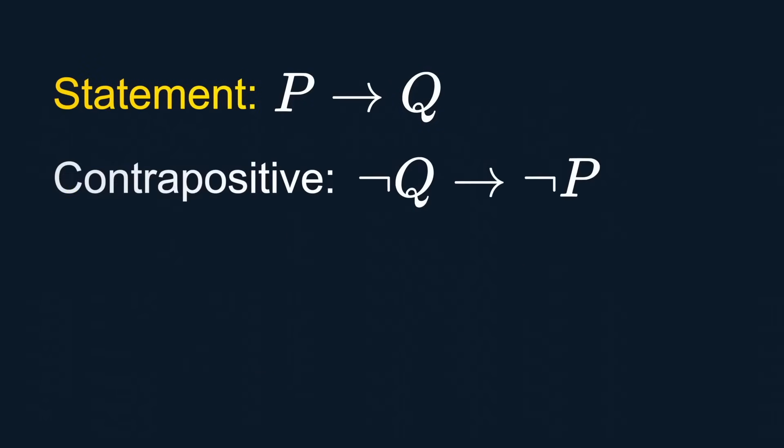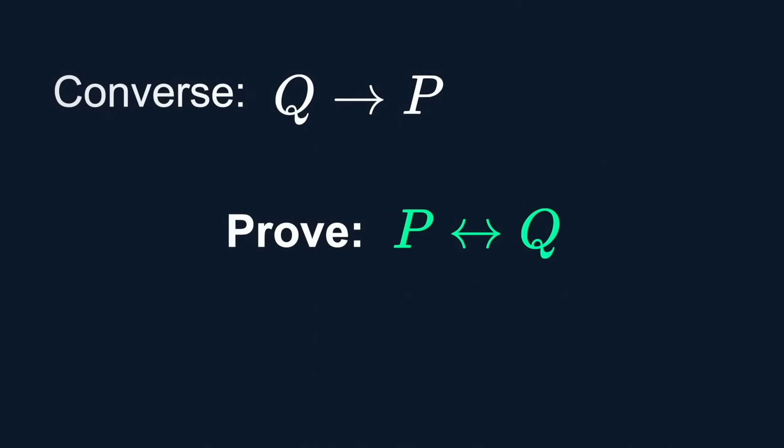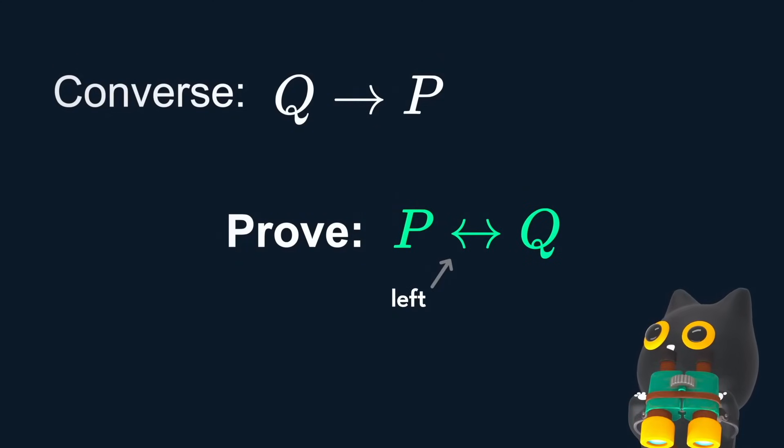Warning! The contrapositive is not to be mixed up with its common buddies, the inverse and the converse. The converse is especially useful for proving the bi-implication. As you can see, the arrows point both left and right. Meaning, we actually have two things to prove: P implies Q, and its converse, Q implies P.